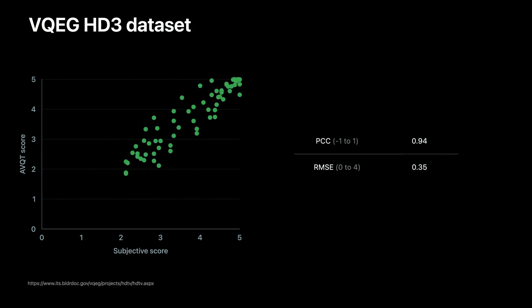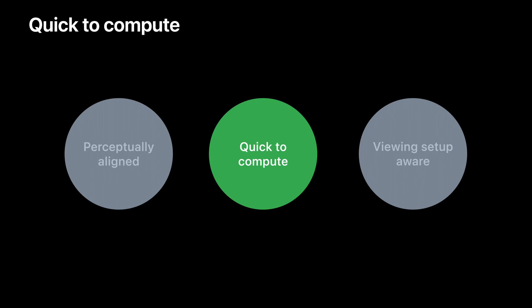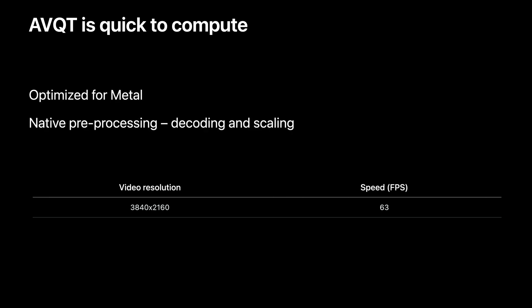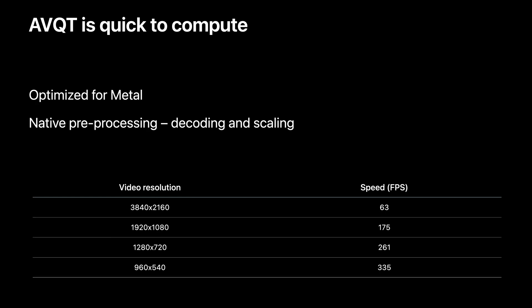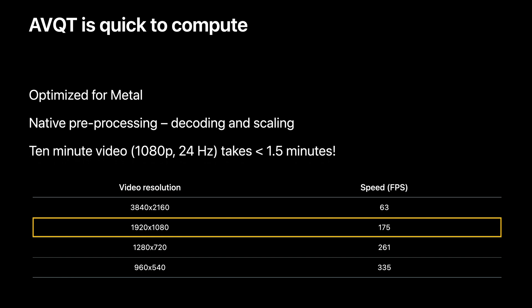We see high performance on the VQAG HD3 dataset as well. AVQT's algorithm is designed and optimized to run fast on Metal, which means you can run through large video files very quickly. It takes care of all preprocessing natively, so you don't have to decode your videos and scale them offline. AVQT runs through a 1080p video at 175 frames per second, so if you have a 10-minute long 1080p video at 24 Hz, AVQT can compute its quality in under 1.5 minutes.